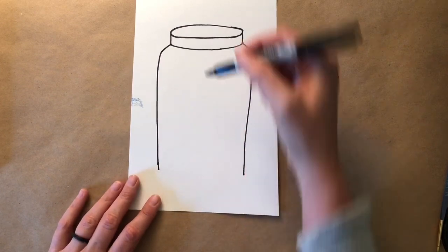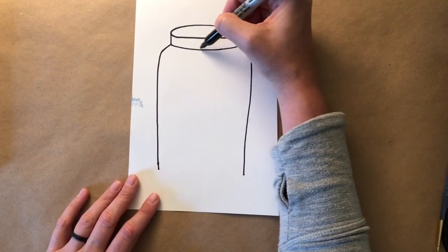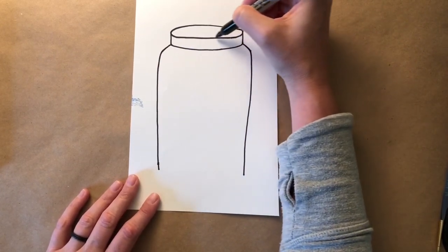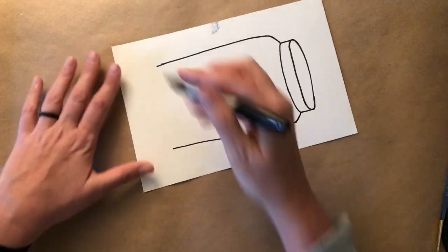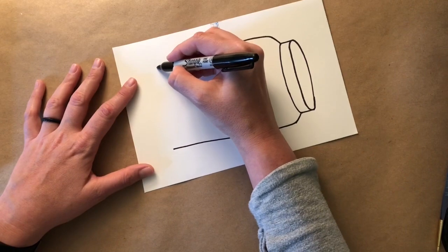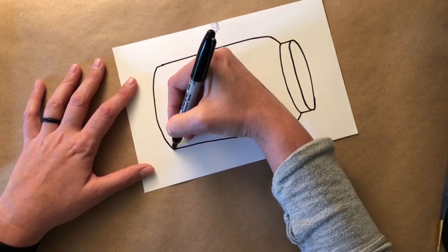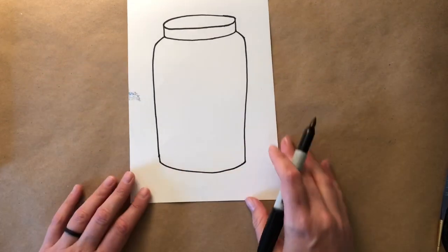And then I'm going to repeat the same curved line that's here and here all the way down here. Again, I'm turning my paper to make it easier for me to draw that curved line. And now I have my jar.